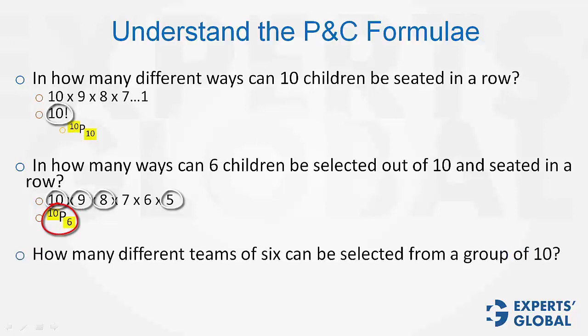Look at the next one. How many different teams of 6 can be selected from a group of 10? How do we solve this? First, let's select 6 out of 10. Assuming that order matters, this could be done in 10 times 9 times 8 until 5, the same number of ways.